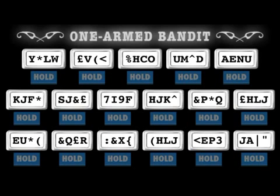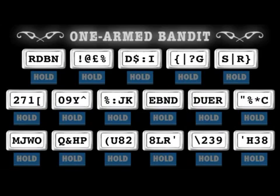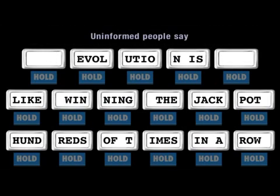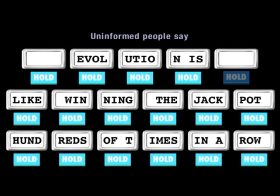People who say that evolution is all about impossibly unlikely accidents and blind luck often like to claim that the probability of life forms evolving is the same as the probability of winning the jackpot on a one-armed bandit hundreds of times in a row. But miraculous accidents are the opposite of what evolution is about. If we're going to use the one-armed bandit analogy, then evolution presses the hold button on almost all symbols on every pull of the lever.